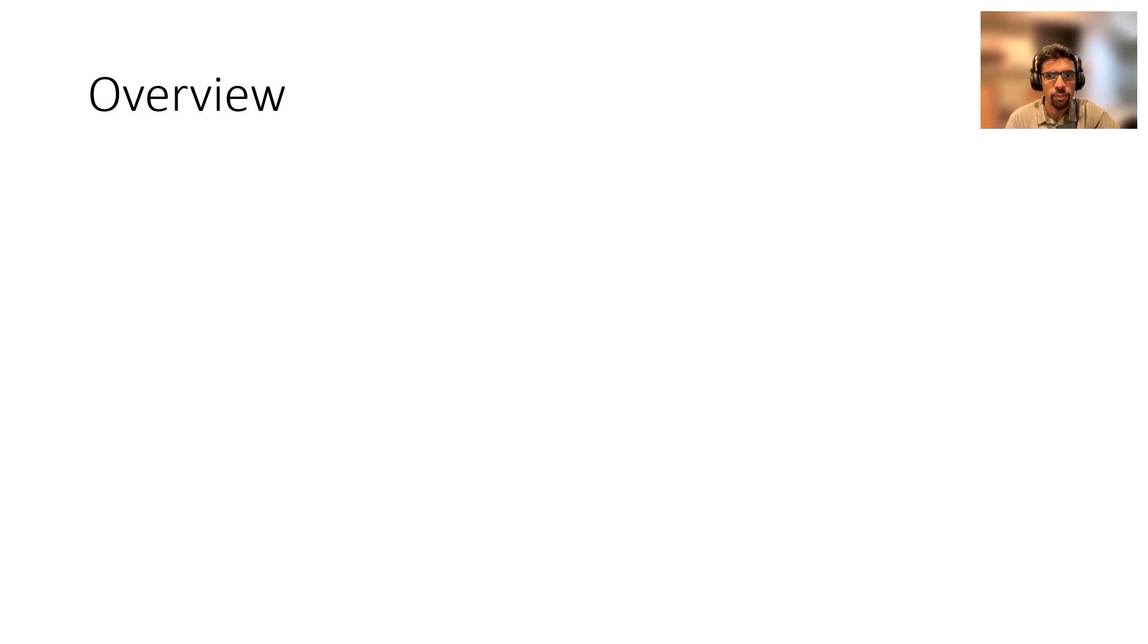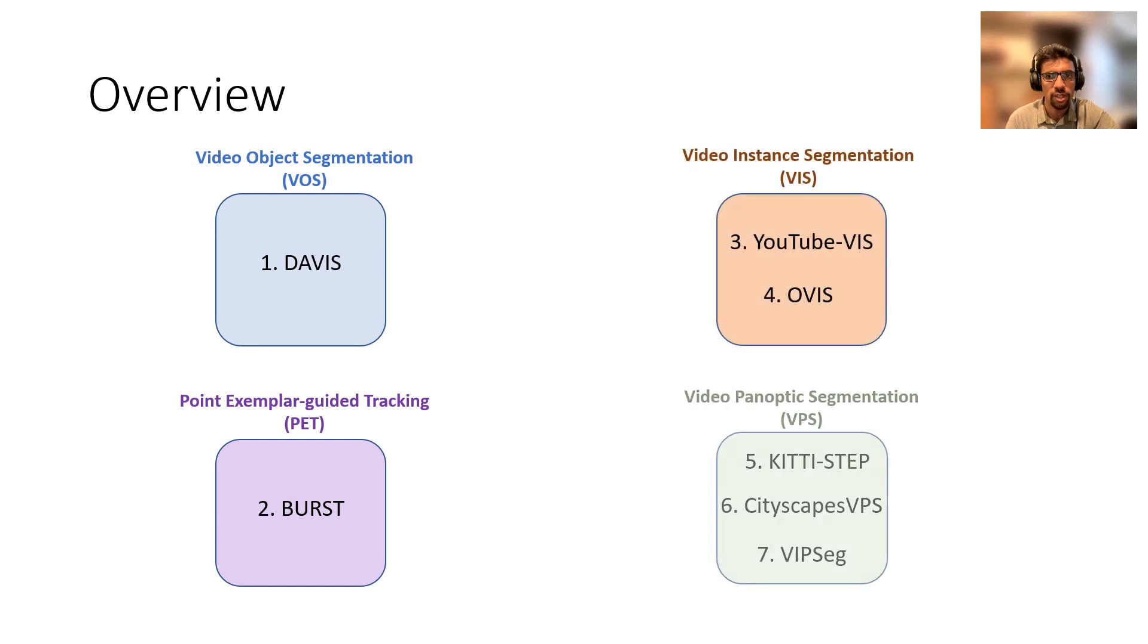To verify our approach, we train a single model jointly on a collection of seven different datasets covering four different video segmentation tasks. Tarvis achieves state-of-the-art results on four of these and performs competitively on the remaining three.